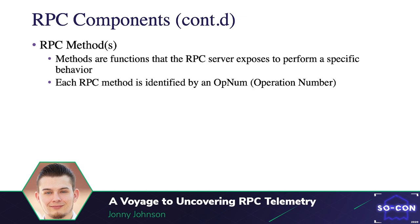RPC methods are functions that the RPC server exposes to perform a specific behavior. Each RPC method is identified by an operation number, known as an op num. You can see this in Microsoft documentation for Microsoft supported RPC protocols. When these methods are called, they accept parameters and arguments, perform the task, and then return data results back to the client.